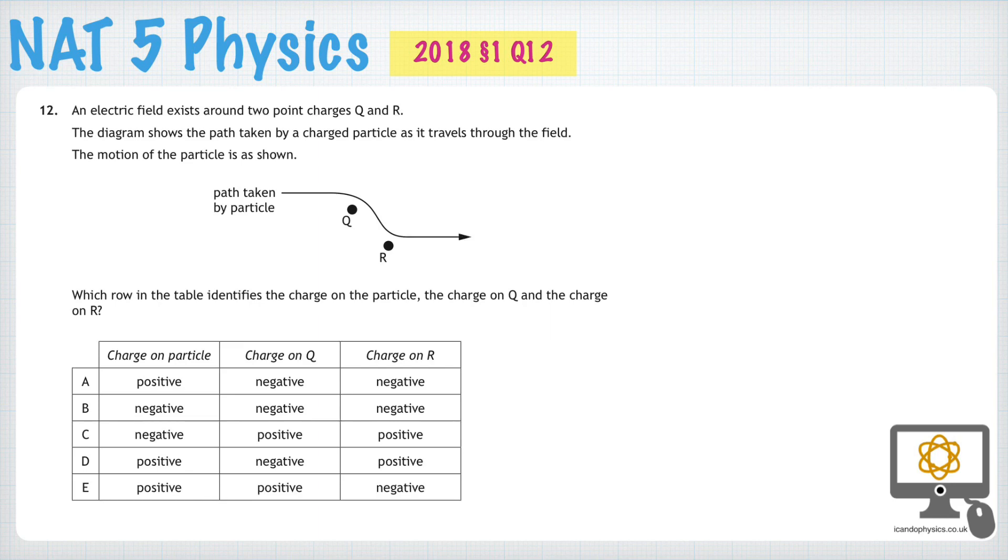Let's say a charge is positive. The electric field around that charge will be radially outward, like this.